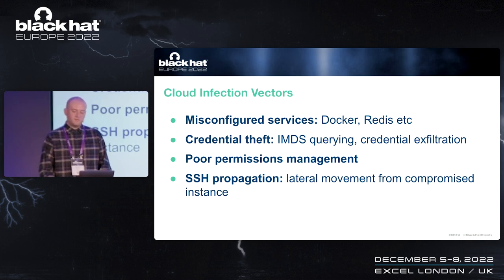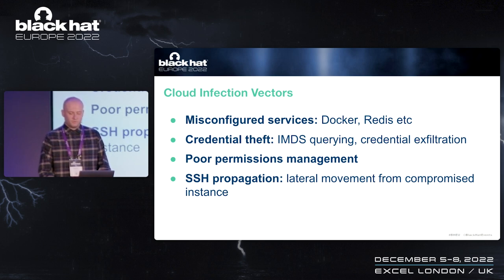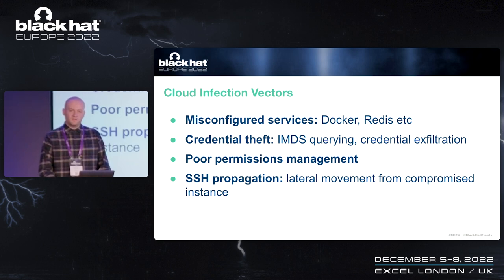Many malicious scripts and malware samples rely on SSH for propagation, which is an obvious choice in cloud compute environments. If a cloud compute instance has a vulnerable service running and code execution is achieved, it's very easy for an attacker to enumerate the contents of known hosts, find a relevant SSH key, and propagate their malware to any nodes they find.